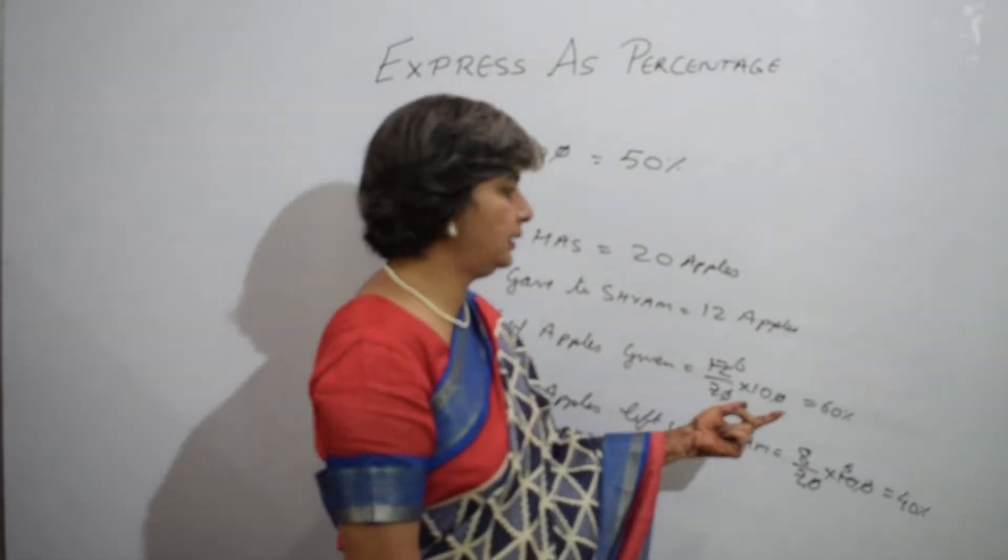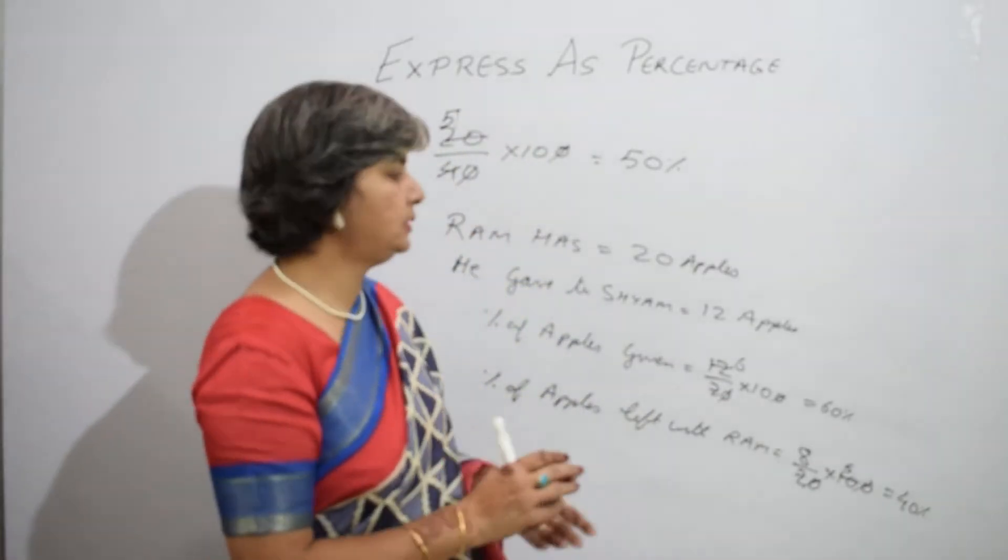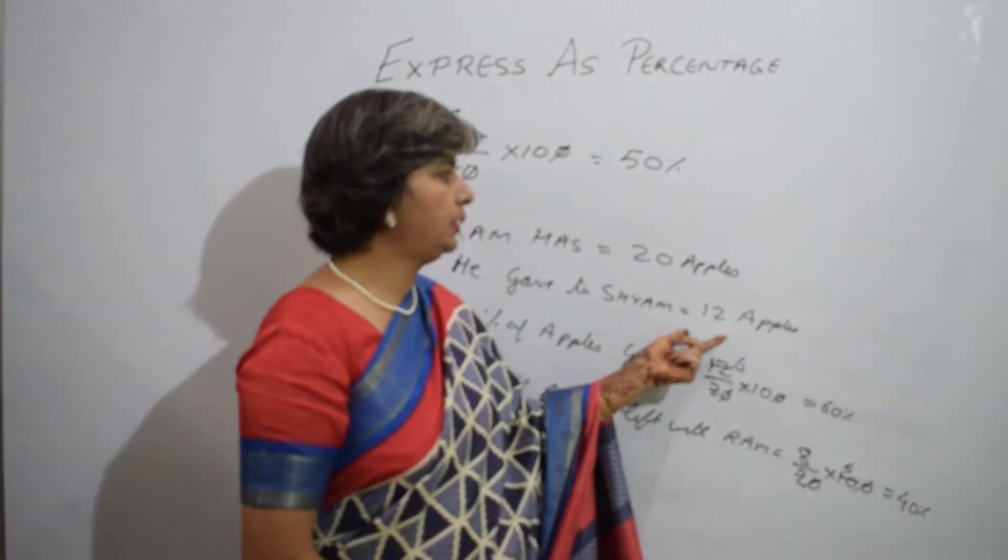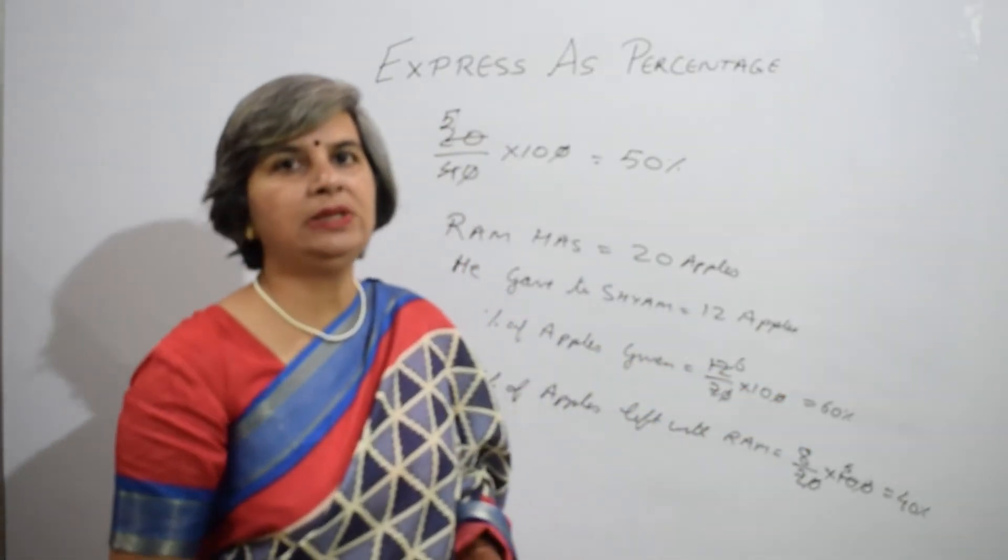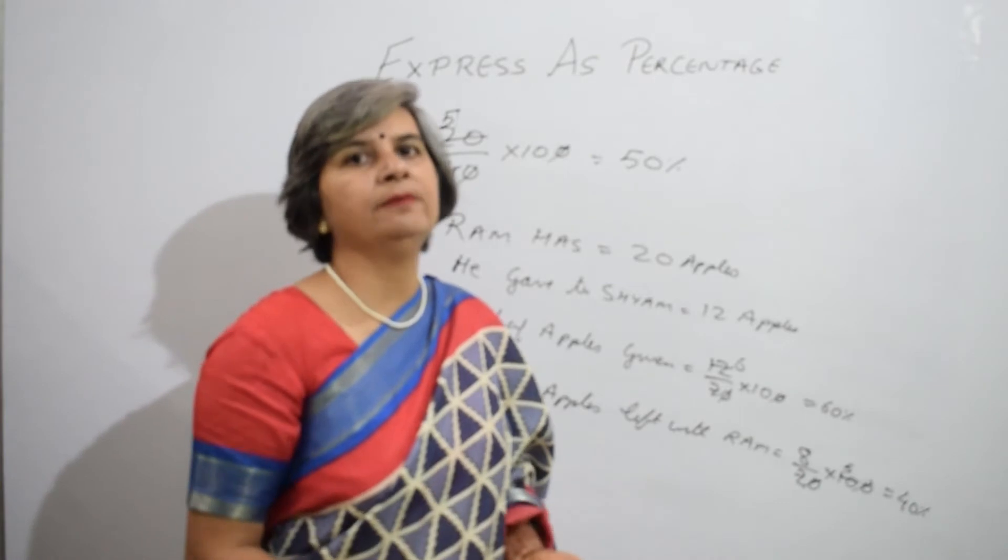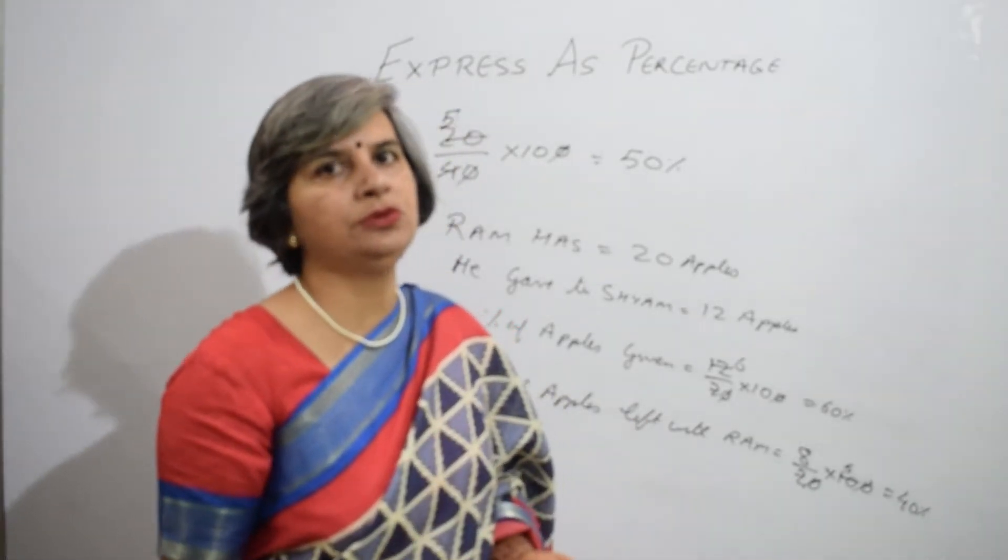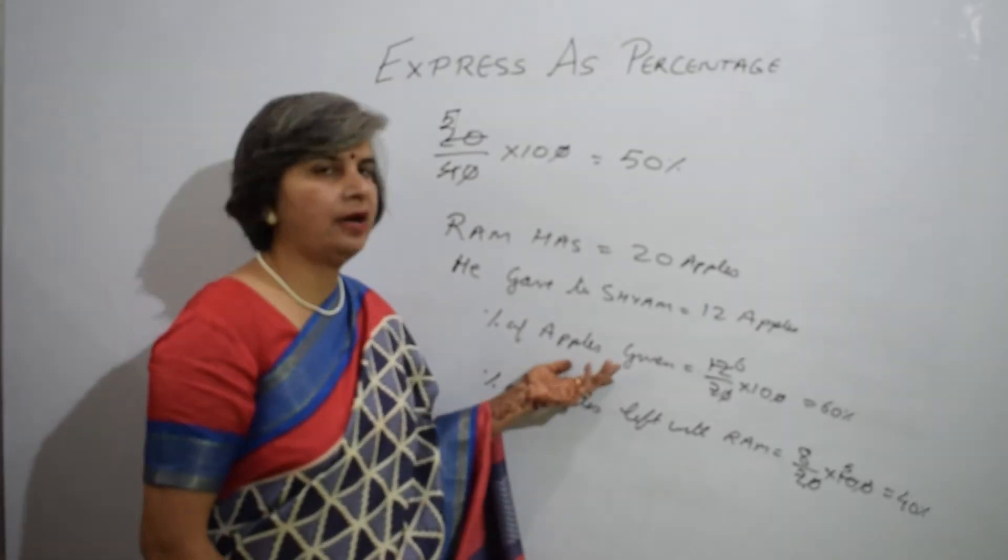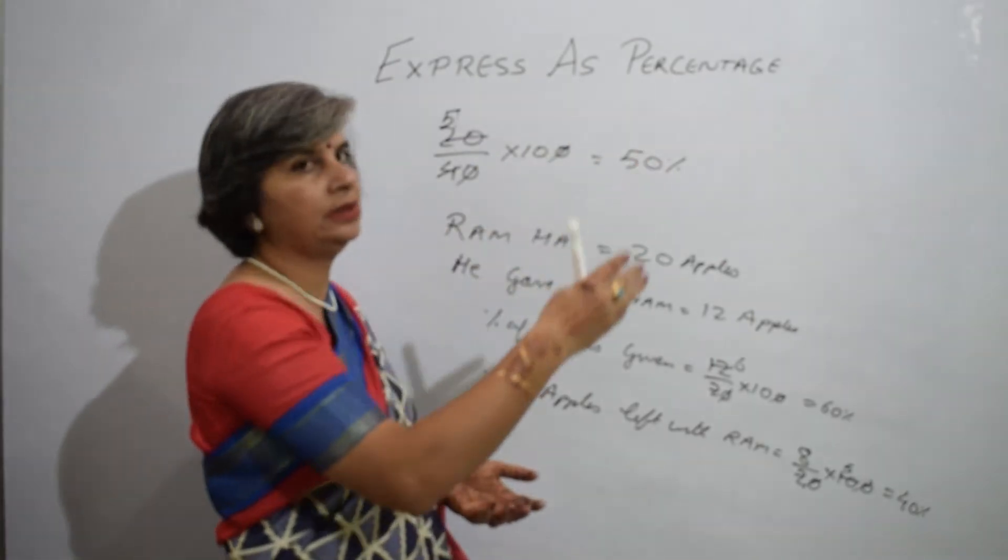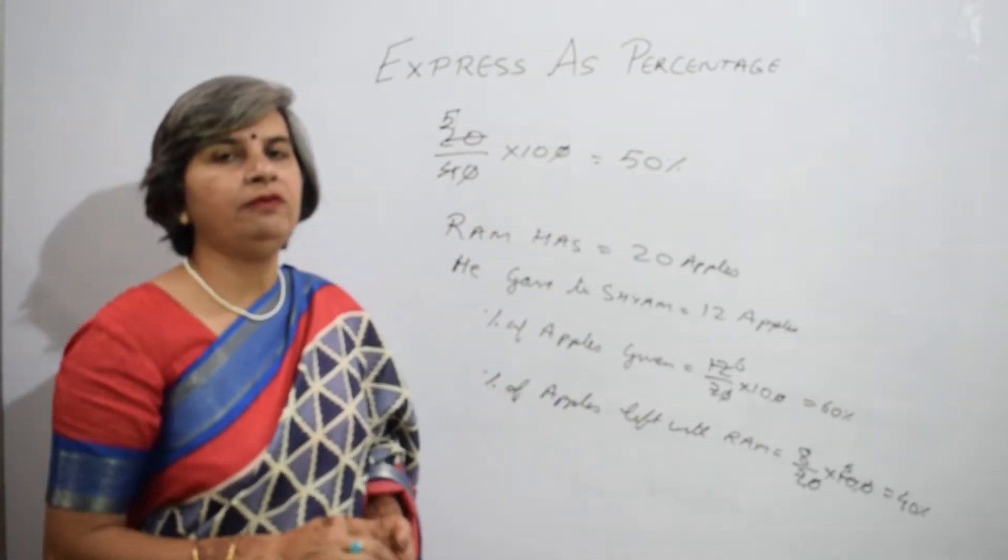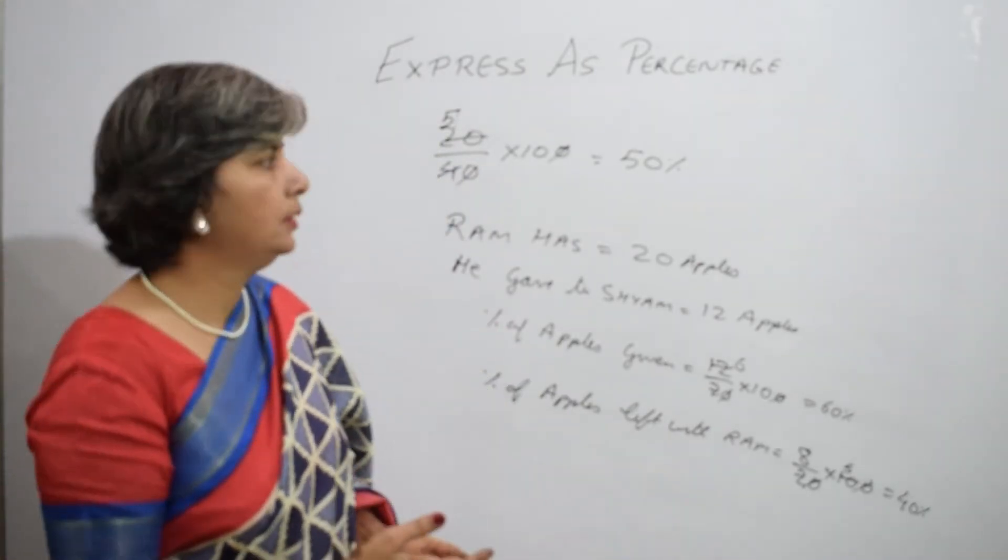This is how we can see that this 60 is if the total were 100. That means when 12 apples were given and 20 were the total, the percentage came out to be 60. That means if he had 100 apples, he would have given 60 apples to Shyam to have the same ratio as in this expression. So, whenever we are expressing anything as a percentage, we are finding its value when the total will be 100.